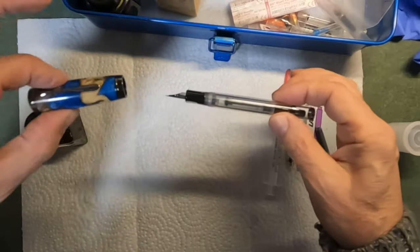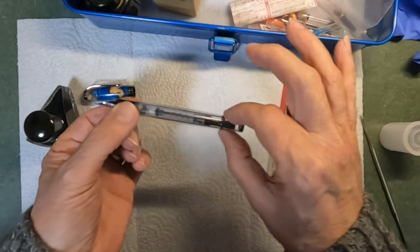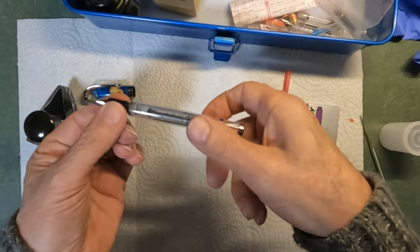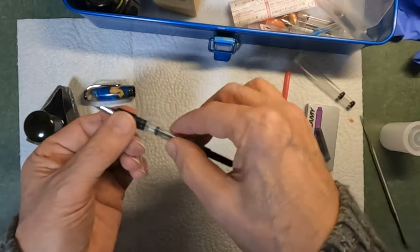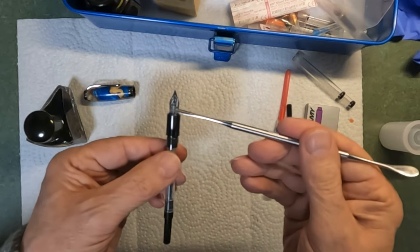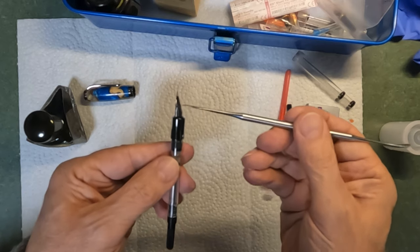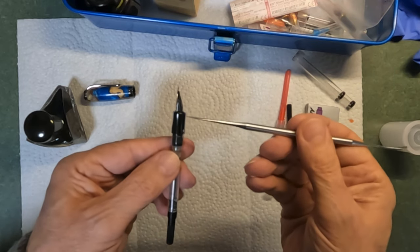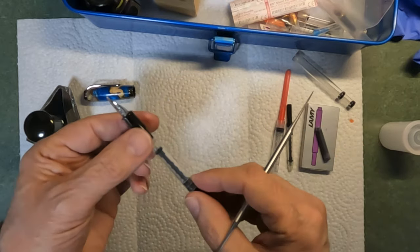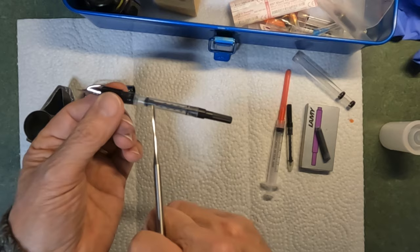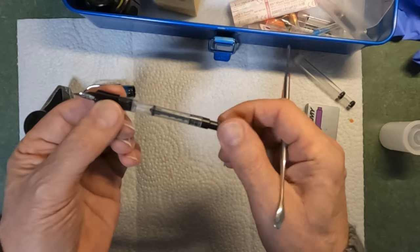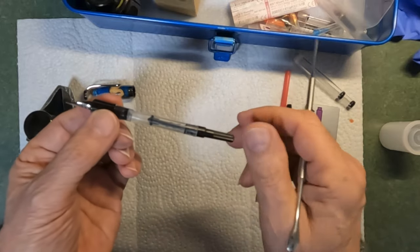So the very first part is the cap. Then the bottom section is referred to as the barrel. Now if I take the barrel off, then in here, we have the nib. And we have, you can see all these fins, that's the feed section. And then we have the converter. And the converter is what holds the ink and it actually has a piston in it that drives the ink into the feed.